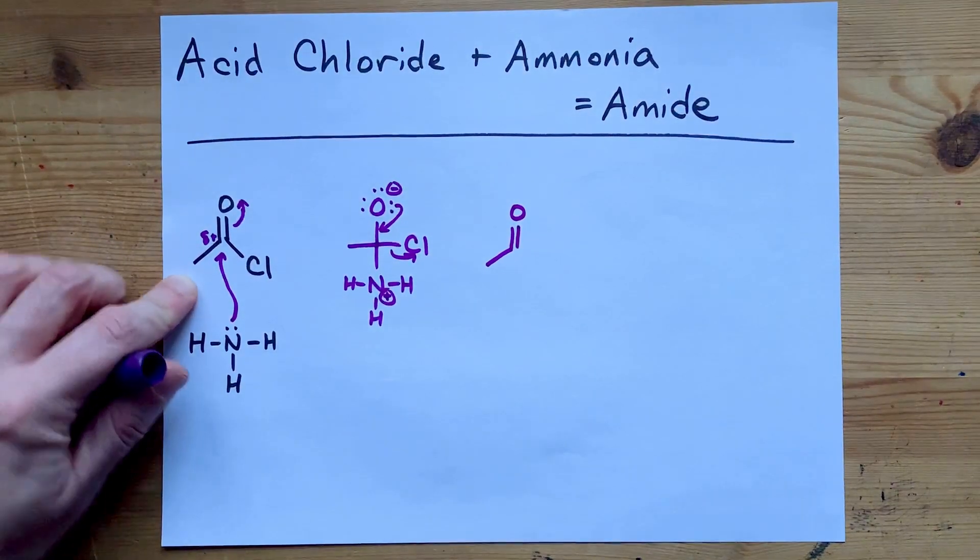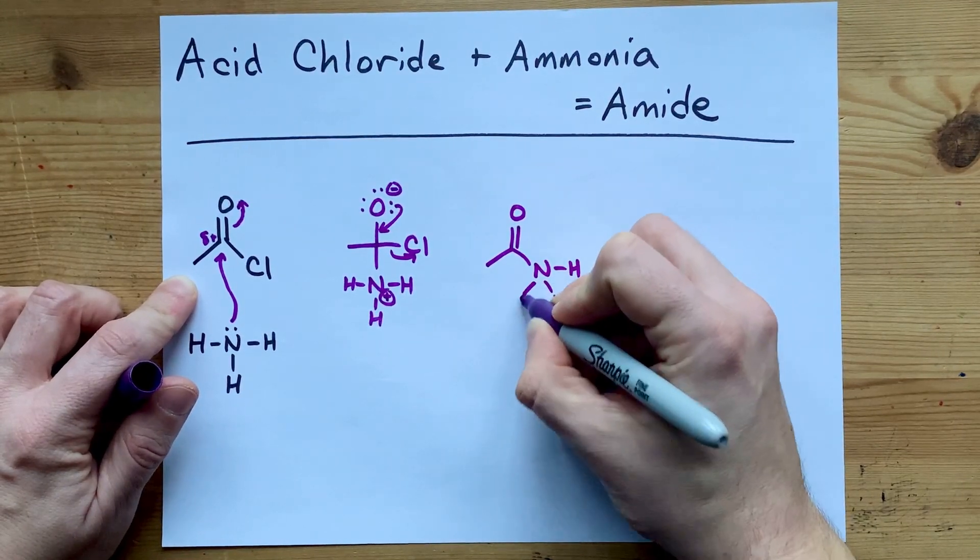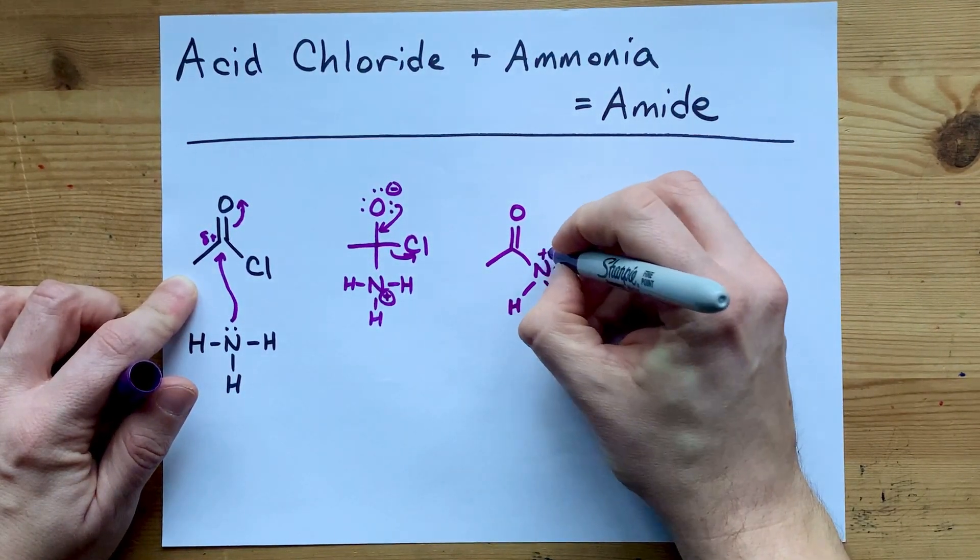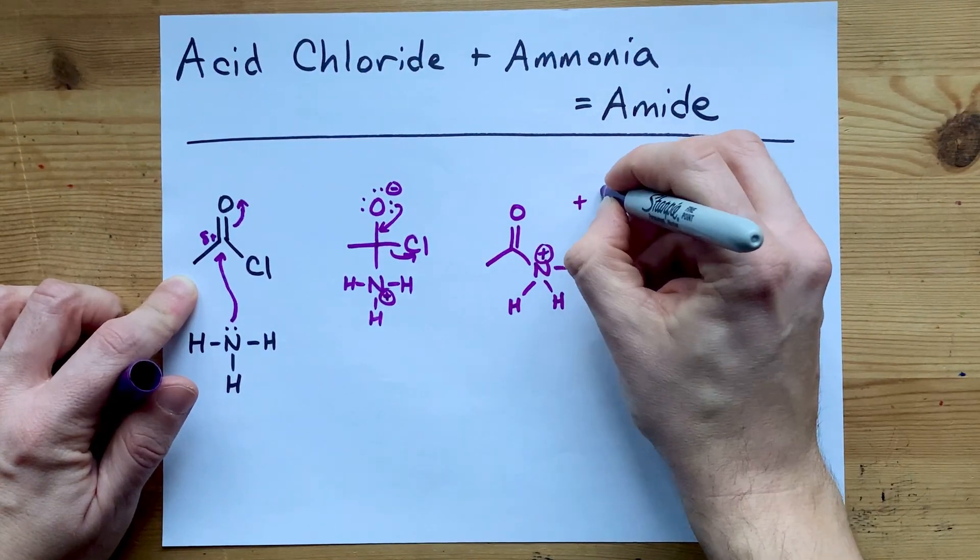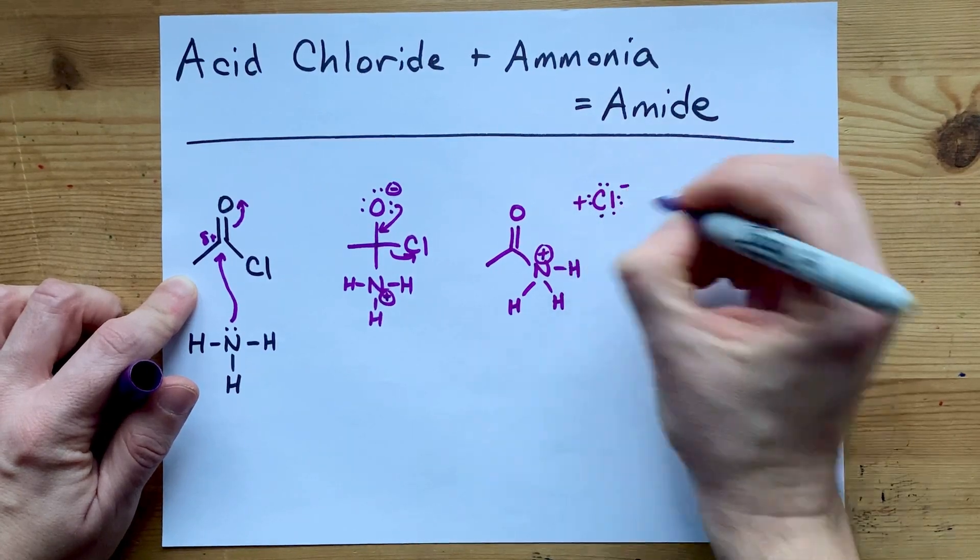and an N which itself still has three hydrogens attached to it. That's a formal charge of plus one. It's the chlorine that left that has a formal charge of minus one. It now has a full eight electrons.